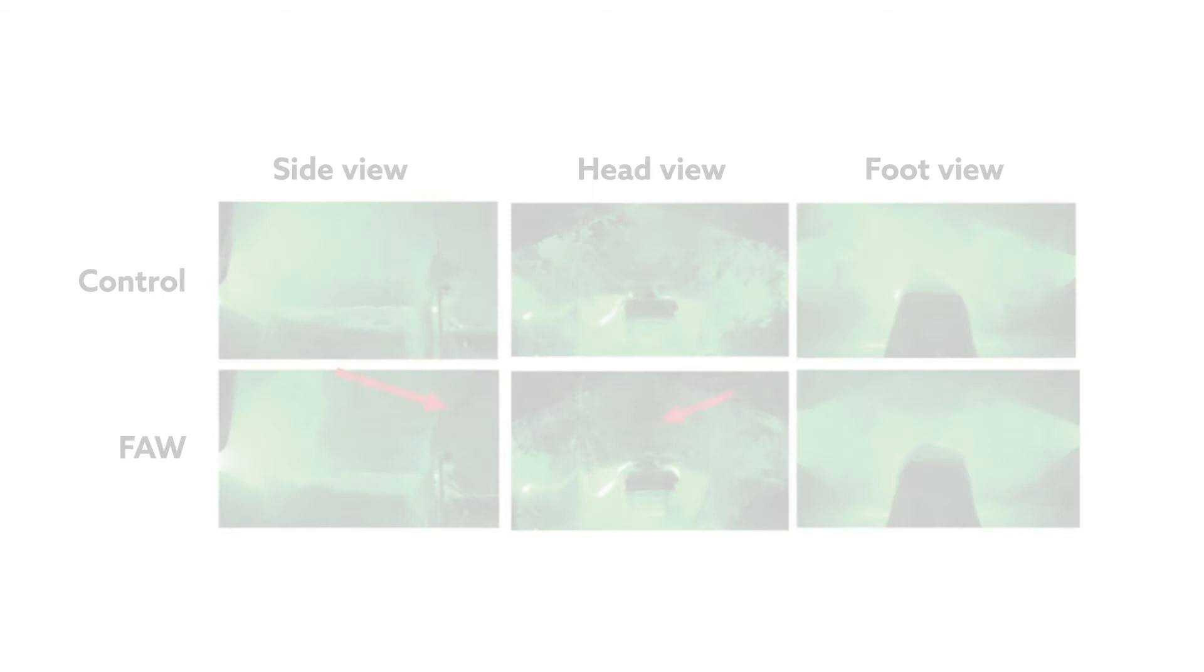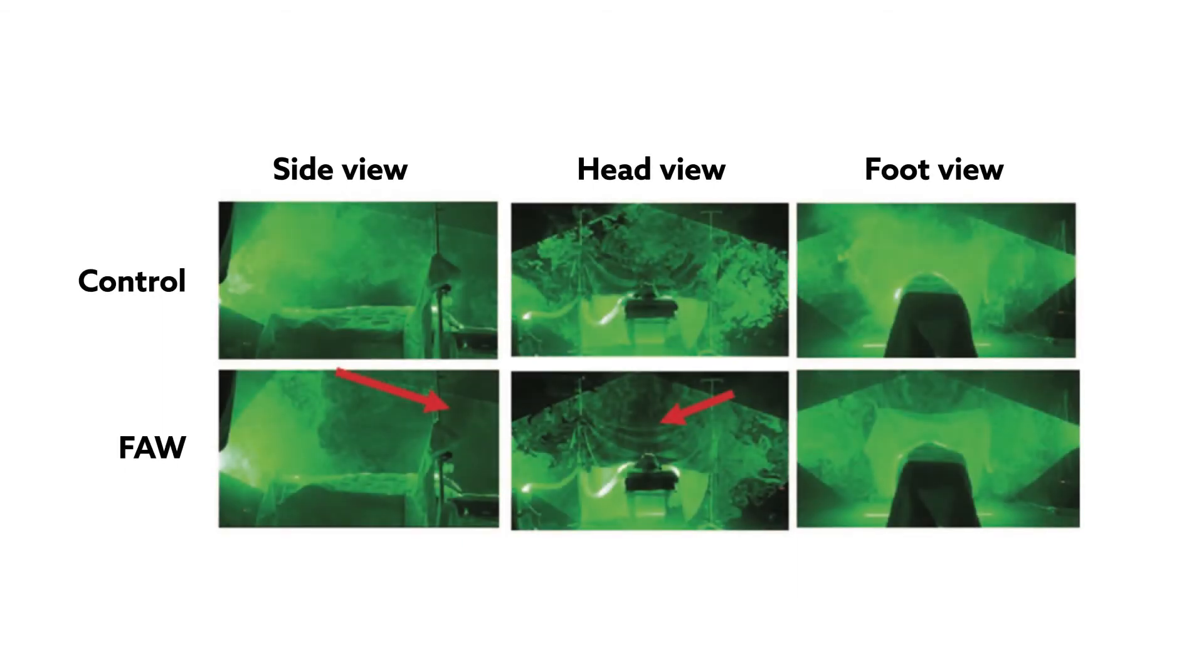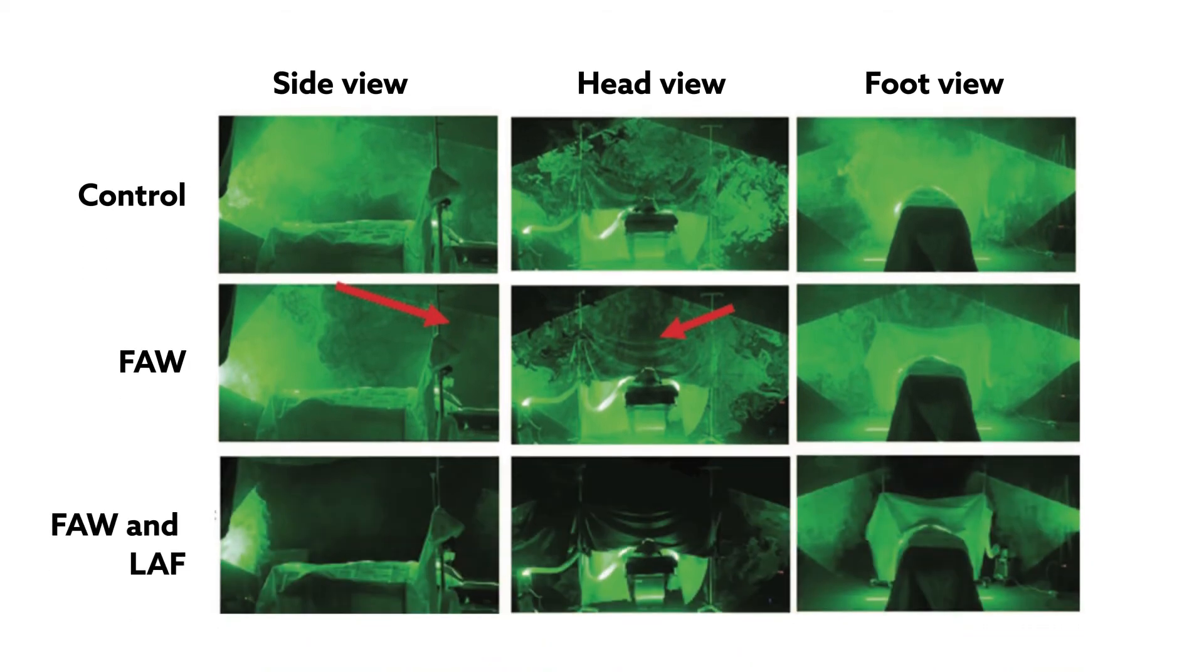The group also filled the room with smoke and used lasers to visualize air movement under different air flows. Again, in the absence of laminar flow, the forced air warming system caused air to recirculate over the mannequin's body. The stagnant air was cleared out, however, when the laminar flow was re-established.